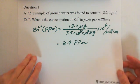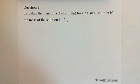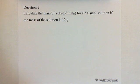The second question: calculate the mass of a drug in milligrams for a 5.0 ppm solution, if the mass of the solution is 10 grams. The given information is the PPM concentration, which is 5.0 ppm, and the mass of solution is 10 grams. We are looking for the mass of the solute.